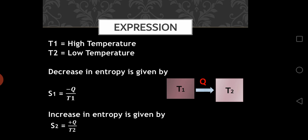While on the other hand, T2 is getting energy, so the entropy of T2 will be increased. So the increase in entropy is given by S2 = Q/T2.